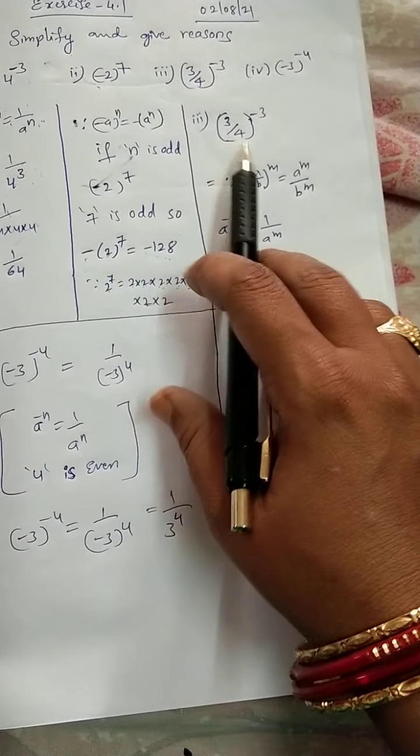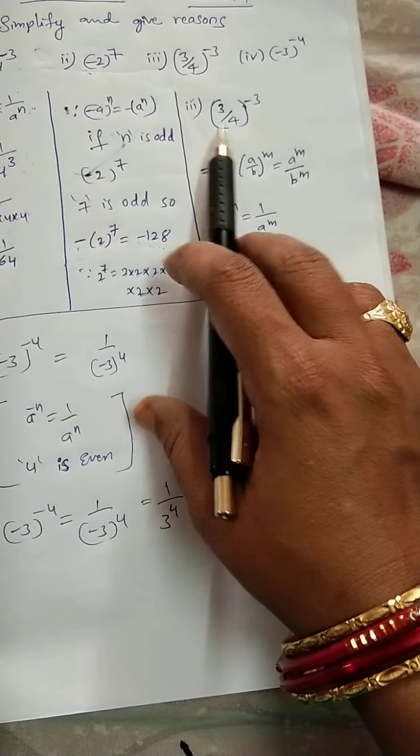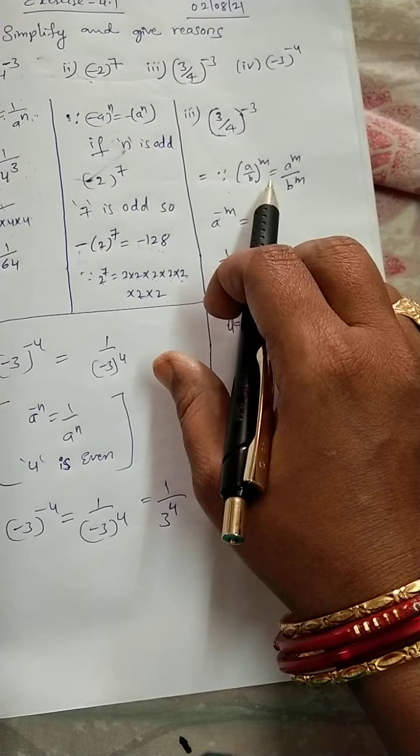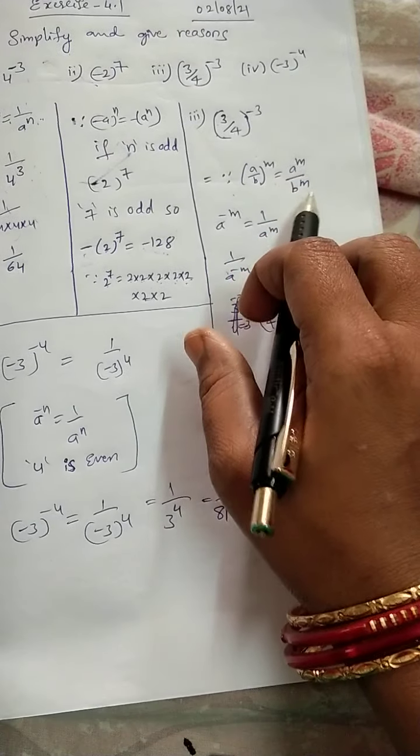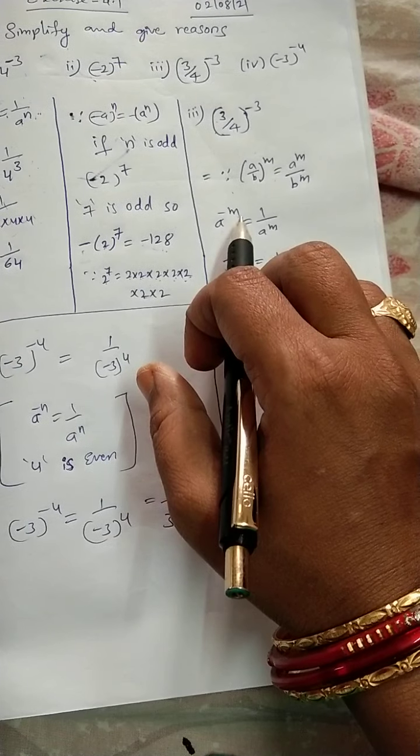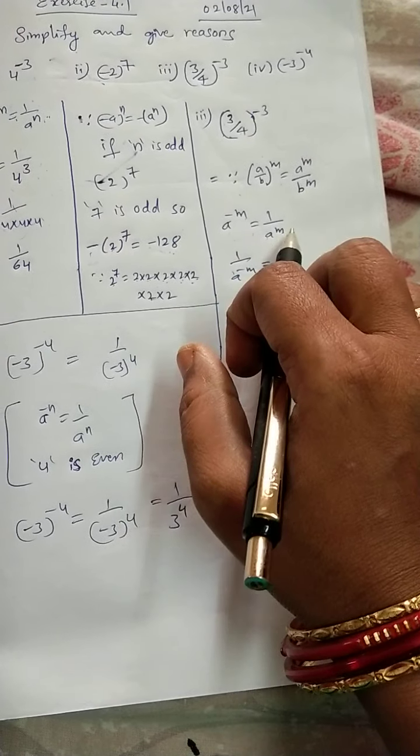Now 3 by 4 whole power minus 3. Here, it is in the form of A by B whole power M. So, we can write as A power M by B power M. Here, A power minus M is equal to 1 by A power M.